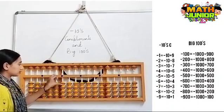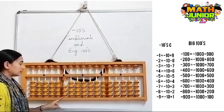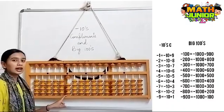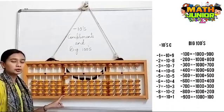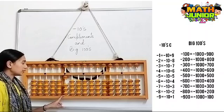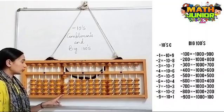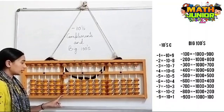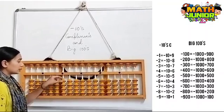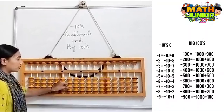Next, I have 1000 here and I need to remove 700. So the formula for minus 700 is minus 1000 plus 300.